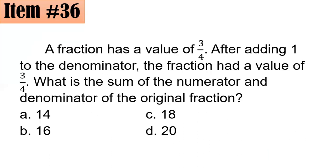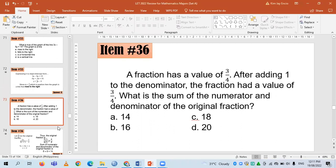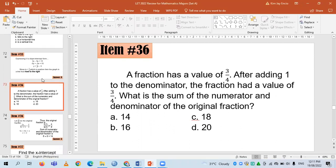Item 36: A fraction has a value of 3 fourths. After adding 1 to the denominator, the fraction has a value of 2 thirds. What is the sum of the numerator and denominator of the original fraction?